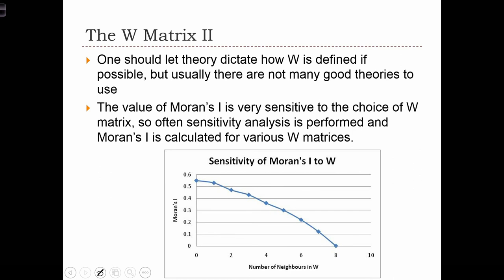Once we know what's inside the W matrix, it's also important to realize that the value of Moran's I is actually quite sensitive to our choice of W. So sometimes what we do, instead of just picking one W matrix, we recompute Moran's I using many different types of W matrices in order to create a sensitivity analysis, and we can see how Moran's I changes with respect to W.